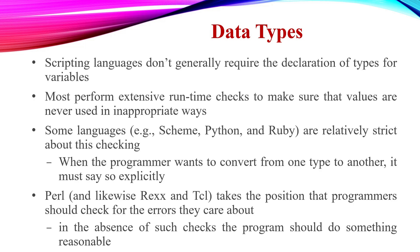In scripting languages, variable type declarations are available. This is runtime checking. Values are used in appropriate ways. In a few languages — Scheme, Python, Ruby — these are scripting languages that are relatively strict about type checking.